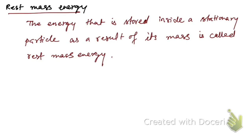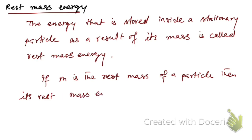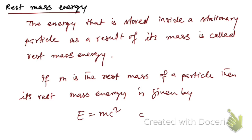So, if m is the rest mass of a particle, its rest mass energy is given by E = mc², where c is the speed of light.